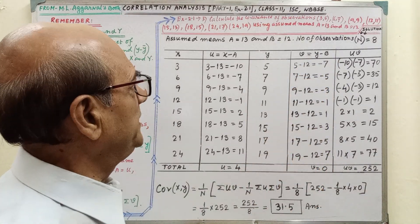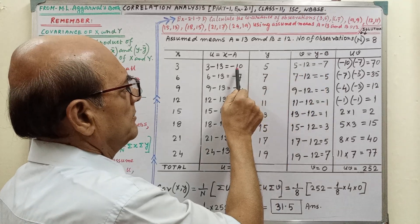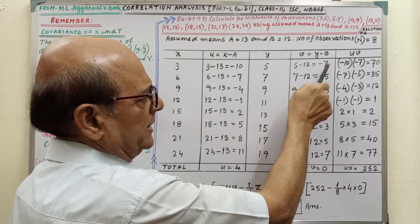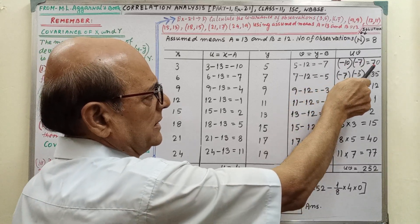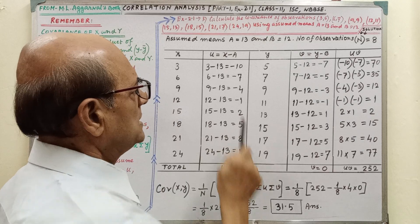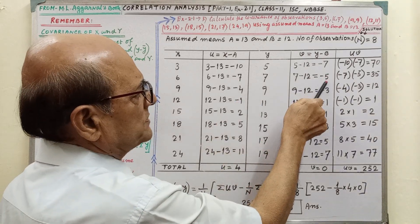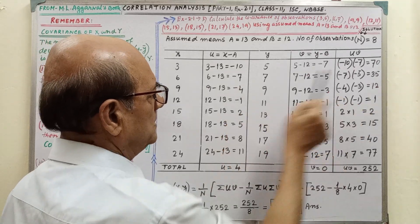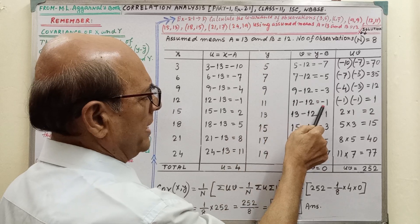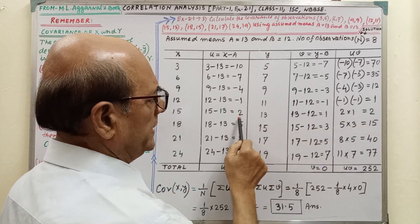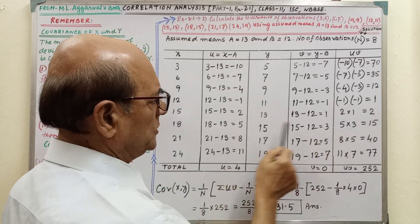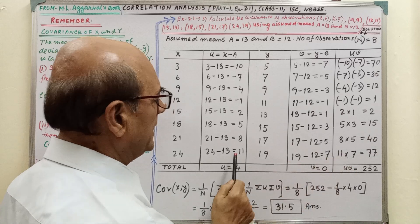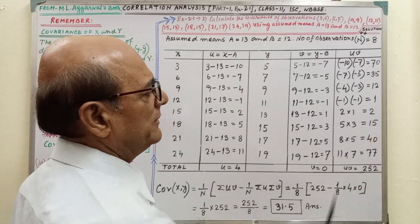After that, we compute the uv column. u is minus 10 and v is minus 7, so minus 10 into minus 7 equals 70. Similarly, minus 7 into minus 5 equals 35. Minus 4 into minus 3 equals 12. Minus 1 into minus 1 equals 1. 2 into 1 equals 2. 5 into 3 equals 15. 8 into 5 equals 40. 11 into 7 equals 77.